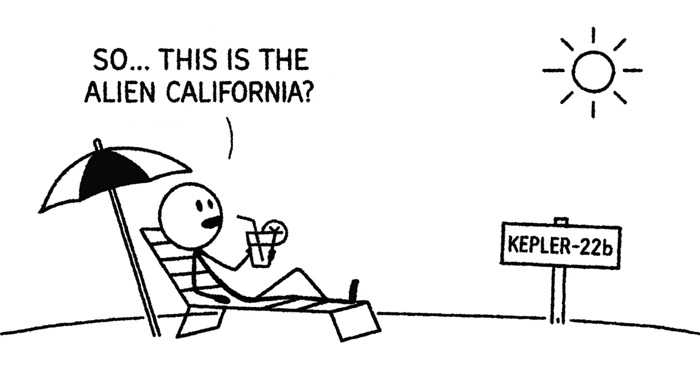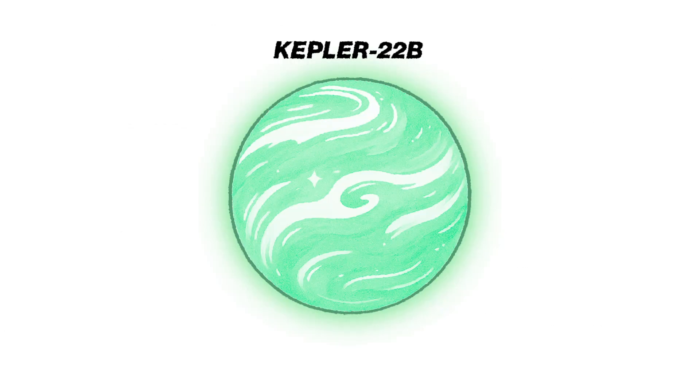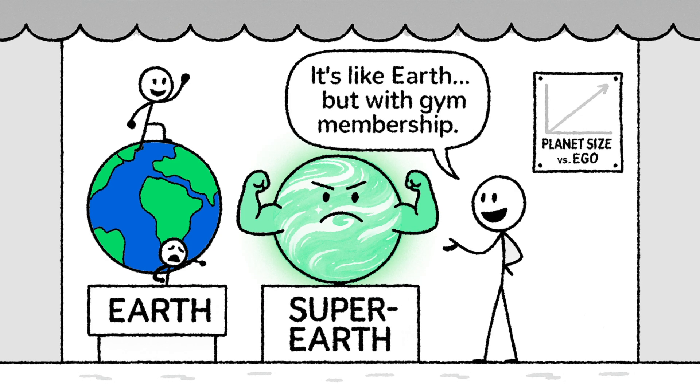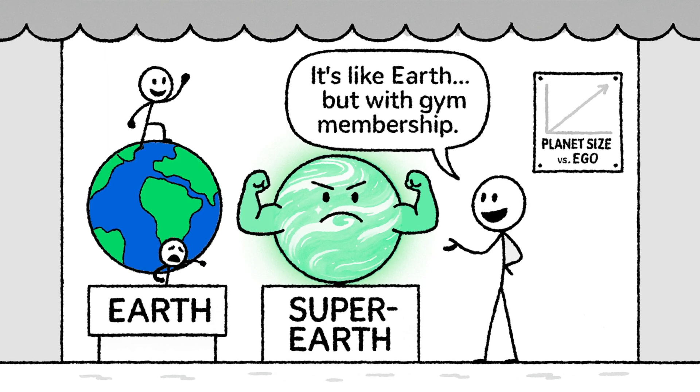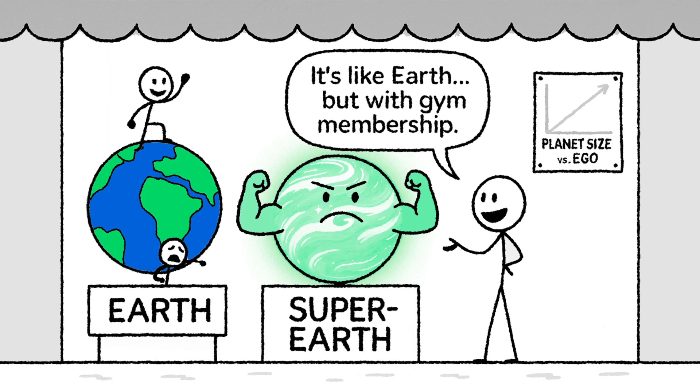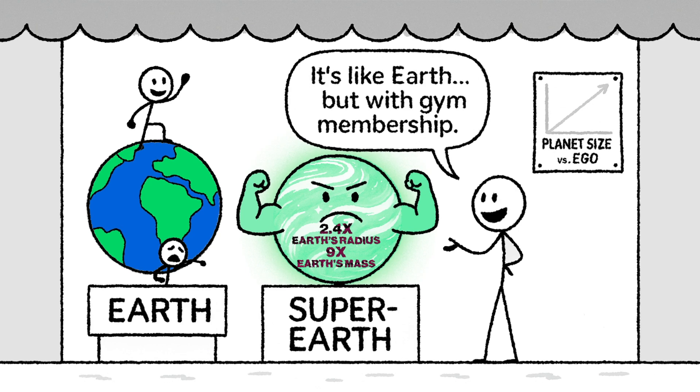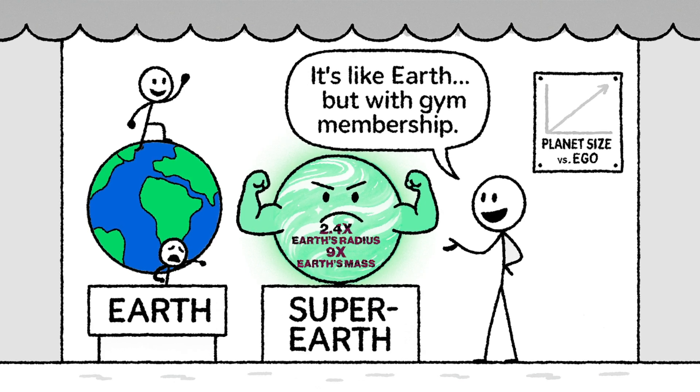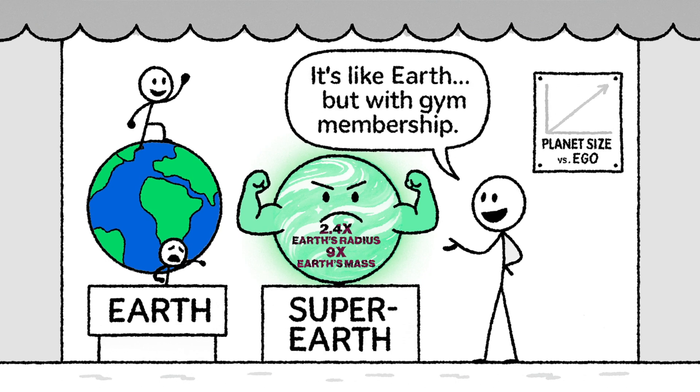But only if the atmosphere plays along. Kepler-22b isn't just Earth-like, it's supersized. It falls into a category astronomers call super-Earths, rocky planets that are larger than Earth but not quite bloated enough to be gas giants like Neptune. Kepler-22b is estimated to be about 2.4 times Earth's radius and more than 9 times its mass. Basically, imagine Earth, but after bulking season.